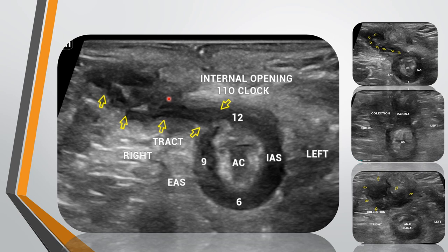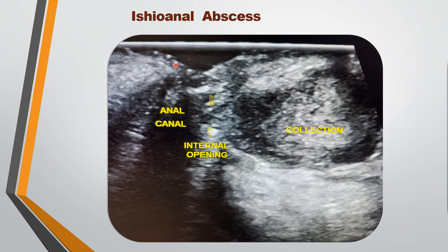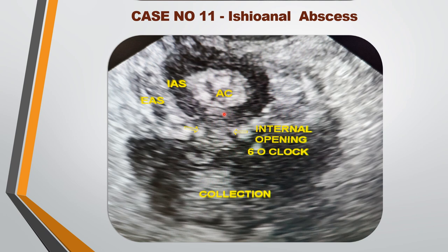In the next case, the linear probe was kept on the anal opening, revealing the anal canal and a large collection with debris material in the posterior ischioanal space, communicating with the anal canal. The distance of the internal opening from the anal opening must be recorded. On axial sections, the internal sphincter, anal mucosa, and external anal sphincter are identified. The collection is located in the posterior ischioanal fossa and communicates with the anal canal at about 6 o'clock position.